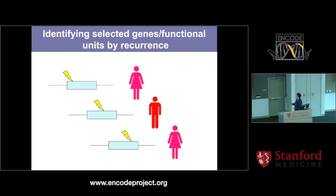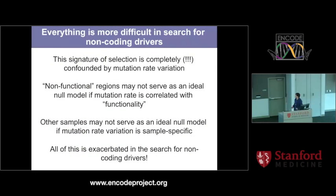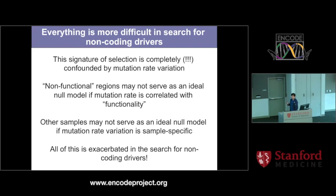We look at an individual gene or individual regulatory region — a functional element identified by ENCODE — across different samples from different patients, and we say: I see a significantly mutated gene or regulatory element because I see many more mutations than expected by chance in this region. The problem with this great idea is that this signature of selection is completely confounded by mutation rate variation. There is no statistical way out. Whether this gene is a cancer driver or simply a mutational hotspot, there is no way to statistically discriminate between the two. I have to model mutation rate — there is no way out.